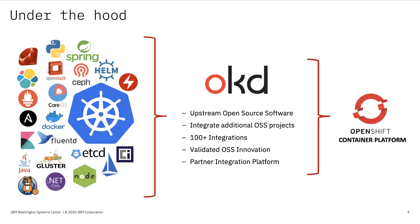Under the hood, OpenShift is a collection of open source software. Red Hat takes all these different open source projects and packages them together, adding functionality including a command line, a GUI, and validated integrations between each component — resulting in OKD. OKD is the upstream open source version of OpenShift that organizations can install for free and try out. When an organization wants to move into production with full support, service, and high availability, it becomes OpenShift Container Platform, or OCP.